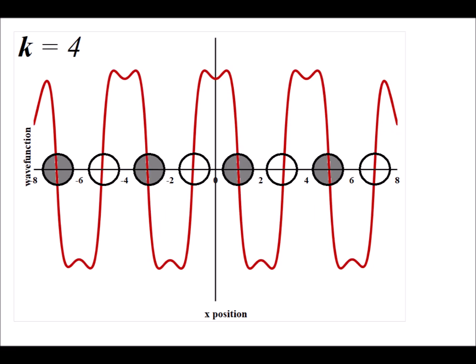Here we have the molecular orbital for when k is equal to 4, and we notice that the resulting wave function oscillates back and forth between positive and negative values. This is consistent with the first, third, fifth, and seventh atoms having a negative phase, and the remaining atoms having a positive phase. So all of the nearest-neighbor interactions here are all anti-bonding. When k is equal to 4, we have the all anti-bonding combination for 1s orbitals.